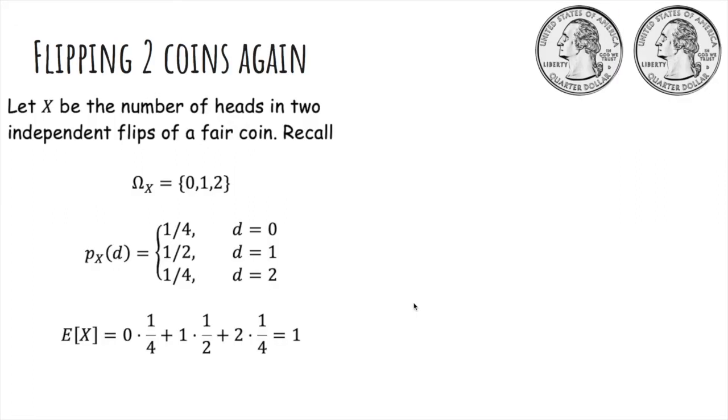Now we'll talk about another property of expectation. Let x be the number of heads in two independent flips of a fair coin. Recall the range was 0, 1, and 2, and this is the probability mass function, and the expected value was 1.